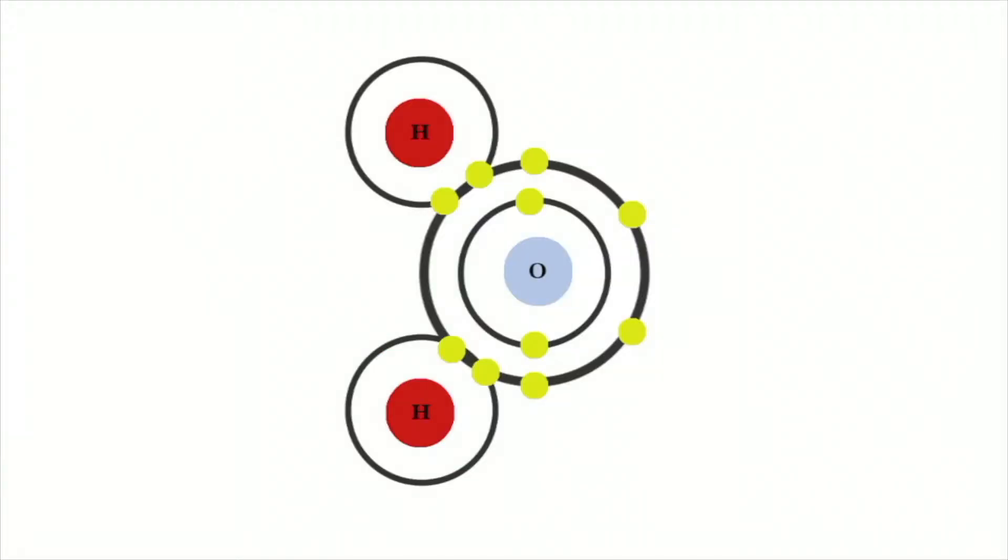The hydrogen atom now has a stable electron configuration. However, oxygen still needs one more electron to have eight electrons in its outer shell. Therefore, it bonds with another hydrogen atom, again sharing electrons. The two atoms of hydrogen and one of oxygen form a covalently bonded stable molecule of water with the chemical formula H2O.